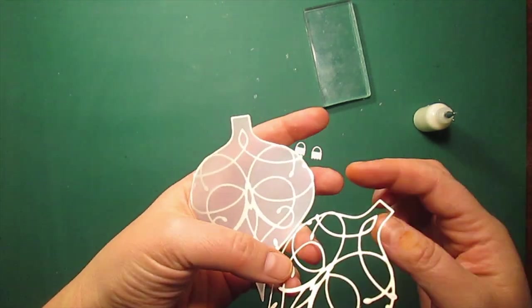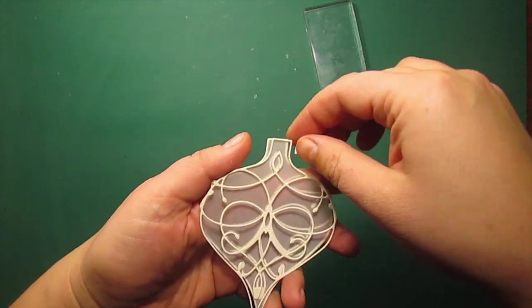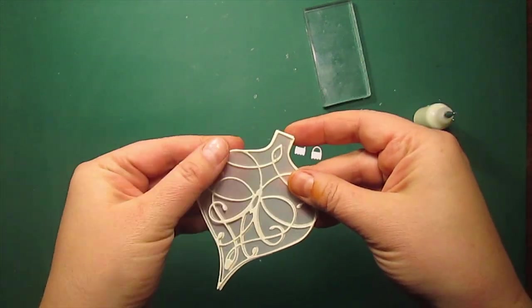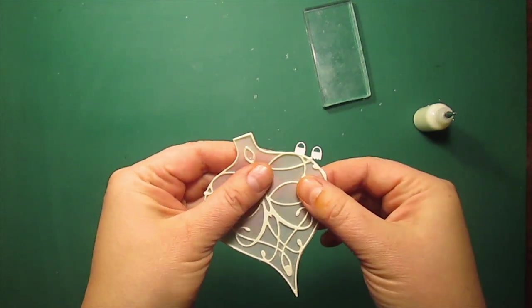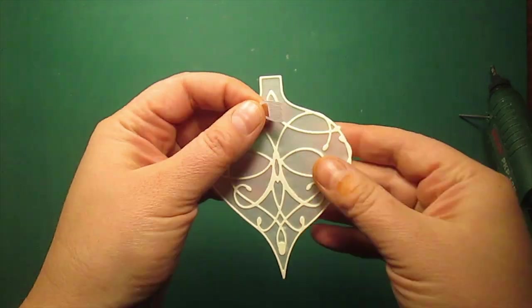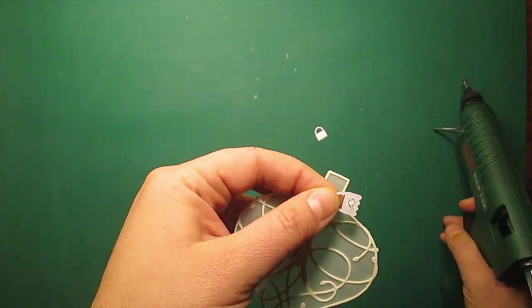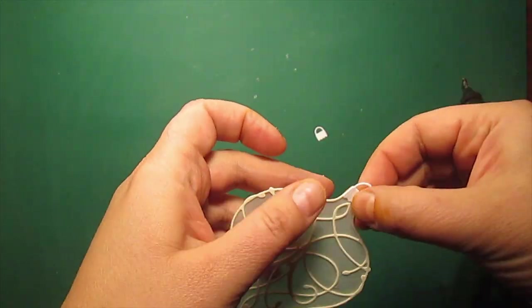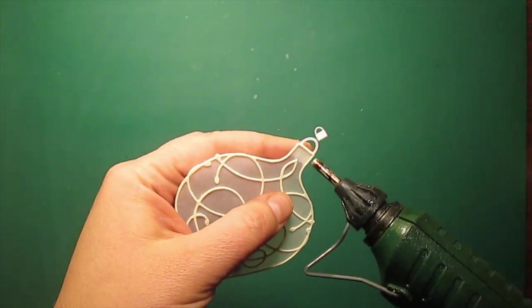I have also decided to attach another outline at the back side to reinforce my ornament. This step is totally optional though. Now I am using the hot glue to stick down the caps at both sides.